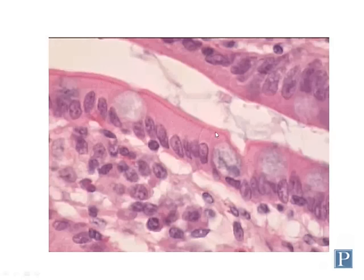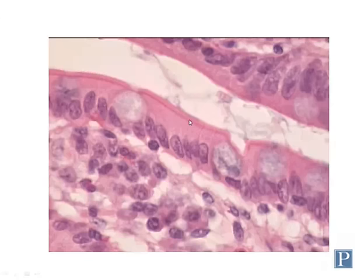The terminal bar is composed of tight junctions, intermediate junctions, and desmosomes, found at the apical surface. Being able to resolve all of those different zones of cell junctions requires a higher magnification only achievable using an electron microscope, so you can't actually see those independently. Instead, they all appear as the same structure — the terminal bar — which is visible in a light microscope.